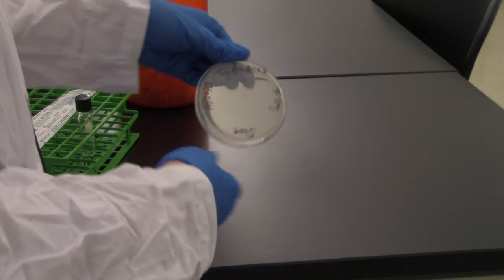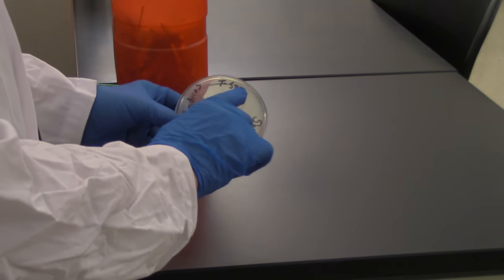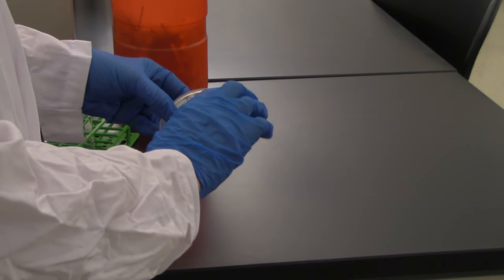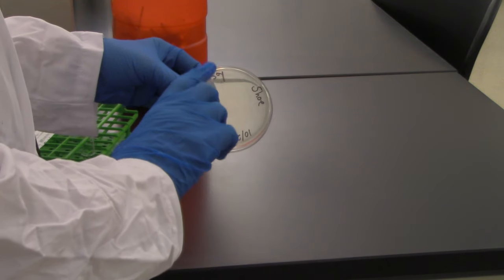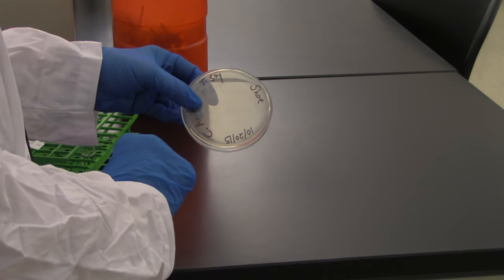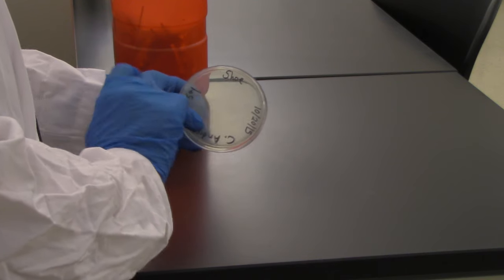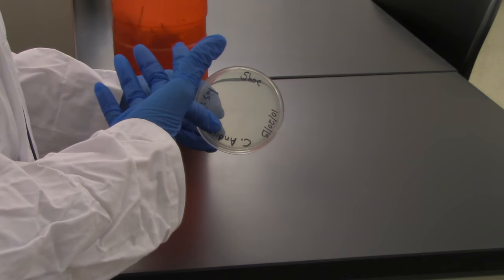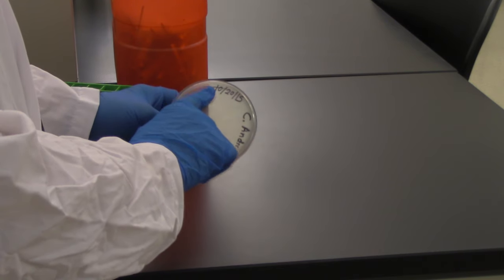I also want to talk about labeling. We always want to include our name, the medium we're using. They can change color and look different after incubation, so we want to make sure we know what we started with. You could put the organism name here normally. I'm going to put where we're sampling from, because we don't know what bacteria we're going to pick up. We're going to sample a shoe. And then finally, the date.